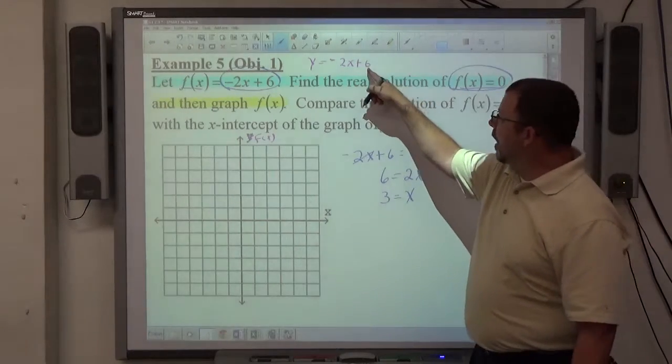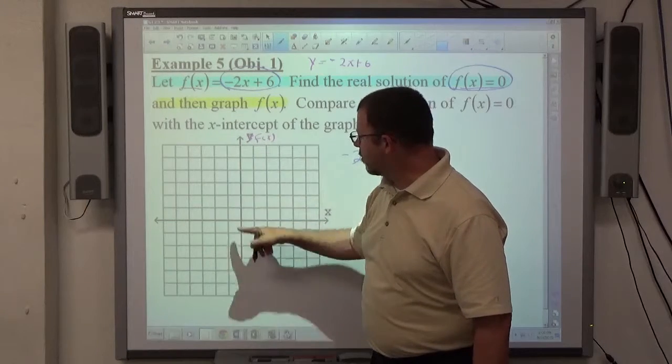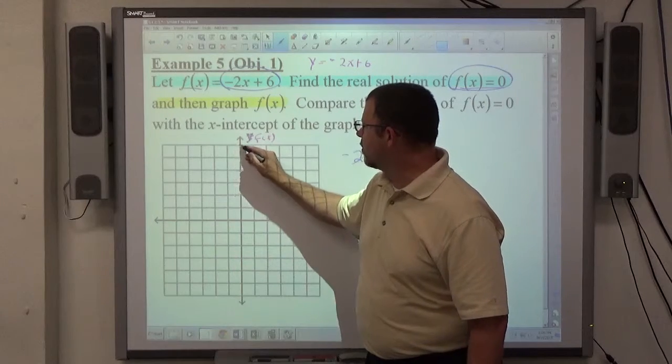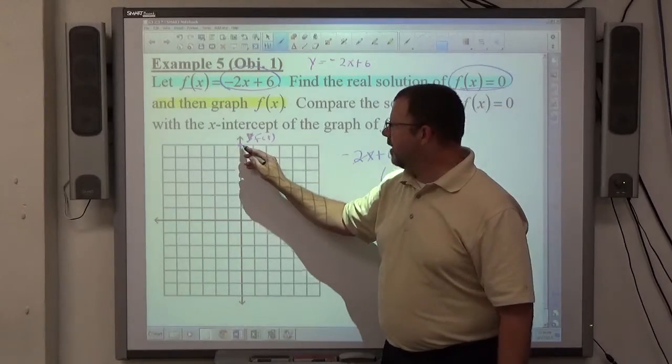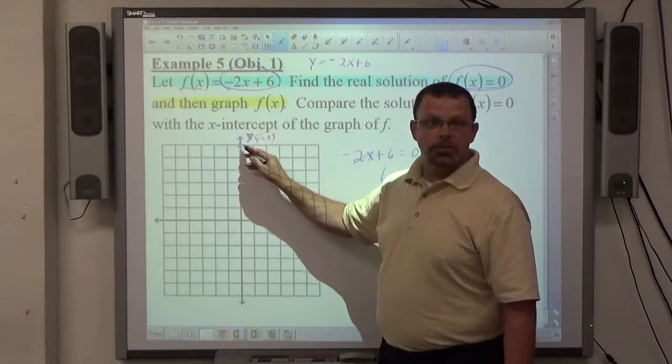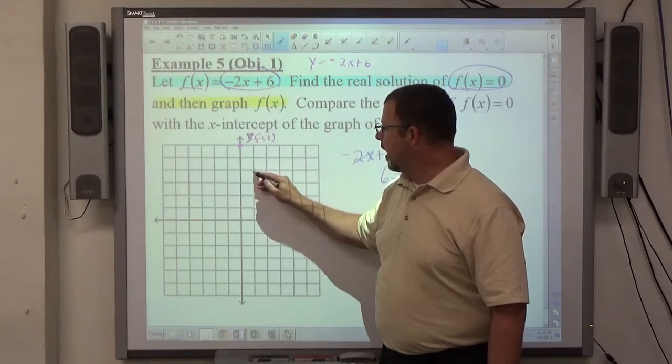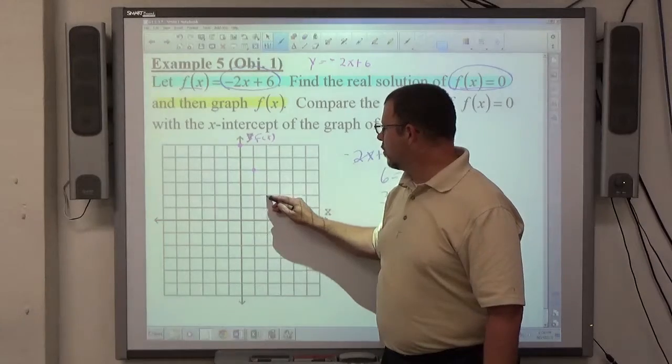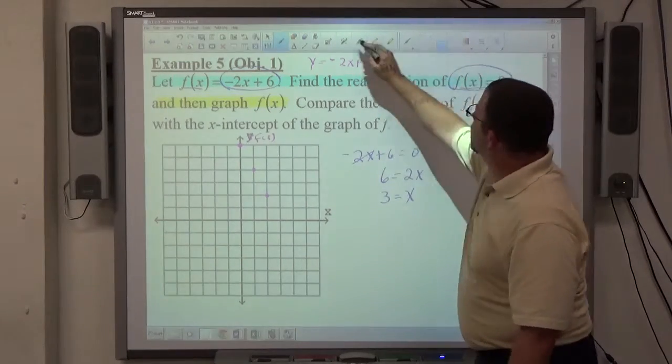The value of the y intercept of 6 tells me it's on the y axis or the f of x axis, 1, 2, 3, 4, 5, 6 spaces up. There's a dot. And then the slope of negative 2 tells me from any dot on the graph, which 0, 6 is a dot on the graph, if I go down 2 and right 1, I get another point. Go down 2 and right 1, I get another point and so on. I connect those dots with a straight line.